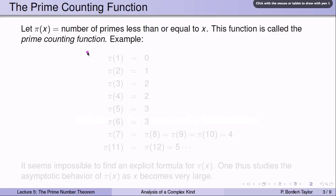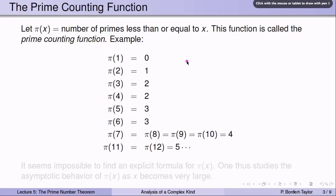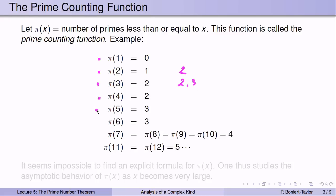To tell you what the prime number theorem says, let π(x) be the number of primes less than or equal to x. This is called the prime counting function — it counts how many prime numbers there are less than or equal to x. For example, π(1) = 0 because there are no prime numbers less than or equal to 1. π(2) = 1 because 2 is the only prime number less than or equal to 2. π(3) = 2 because 2 and 3 are both prime and at most 3. π(4) is still 2, the same two prime numbers.